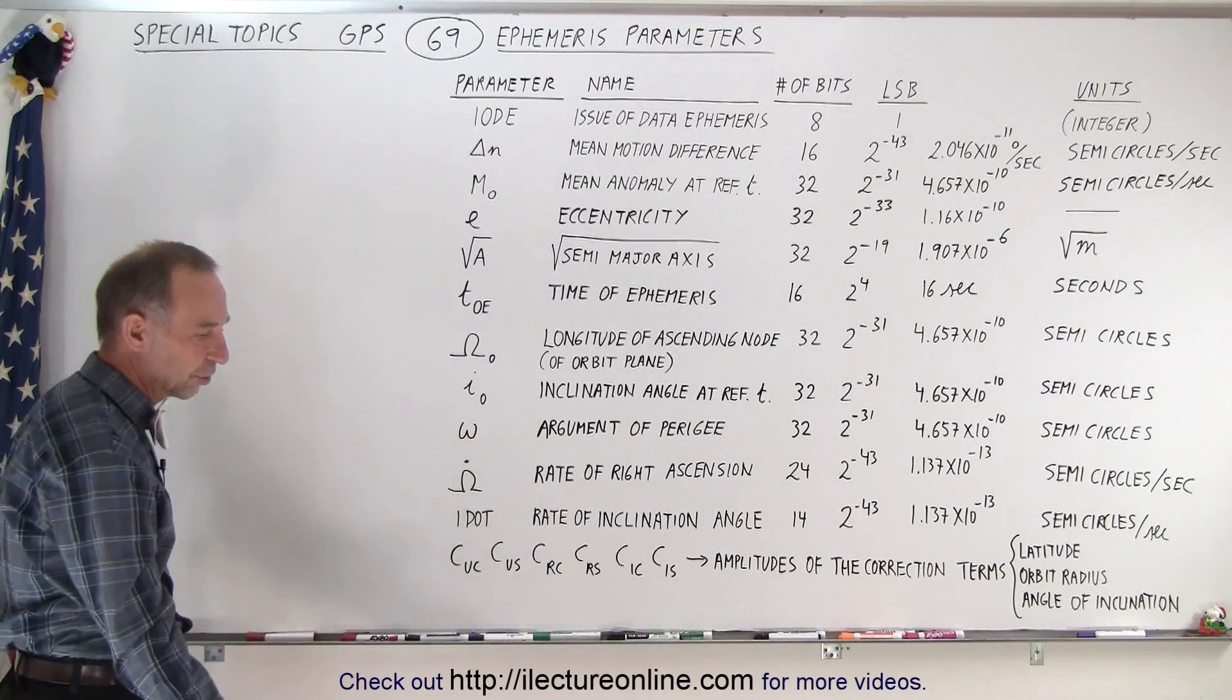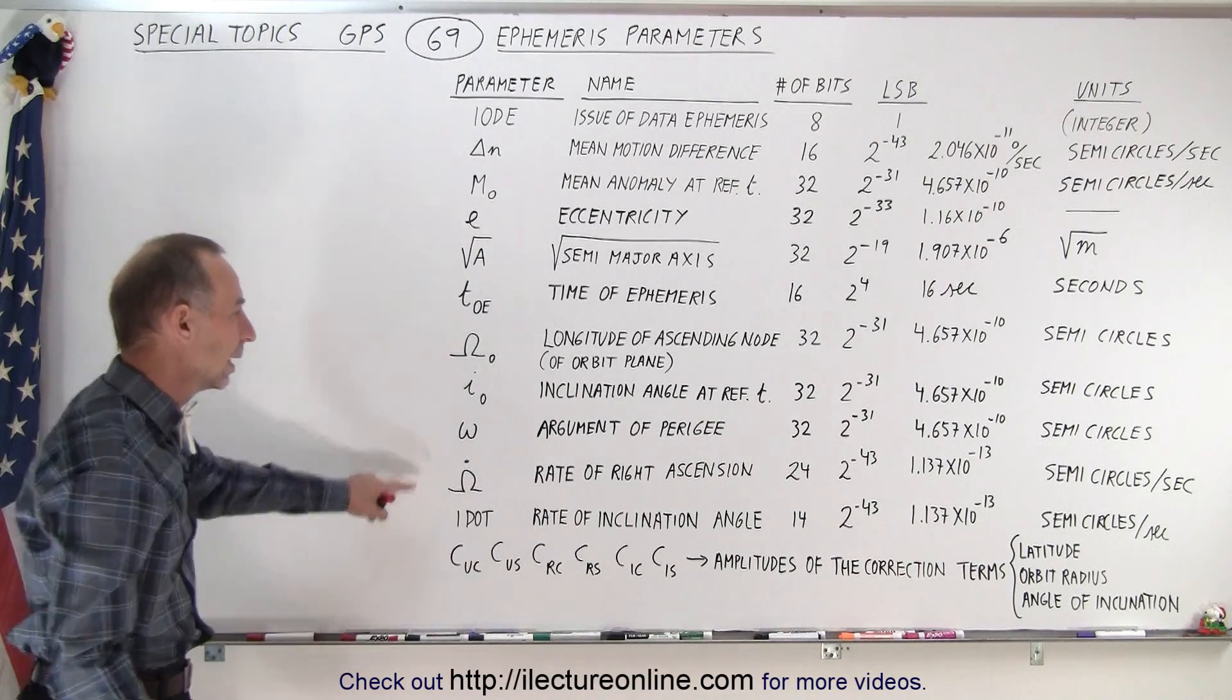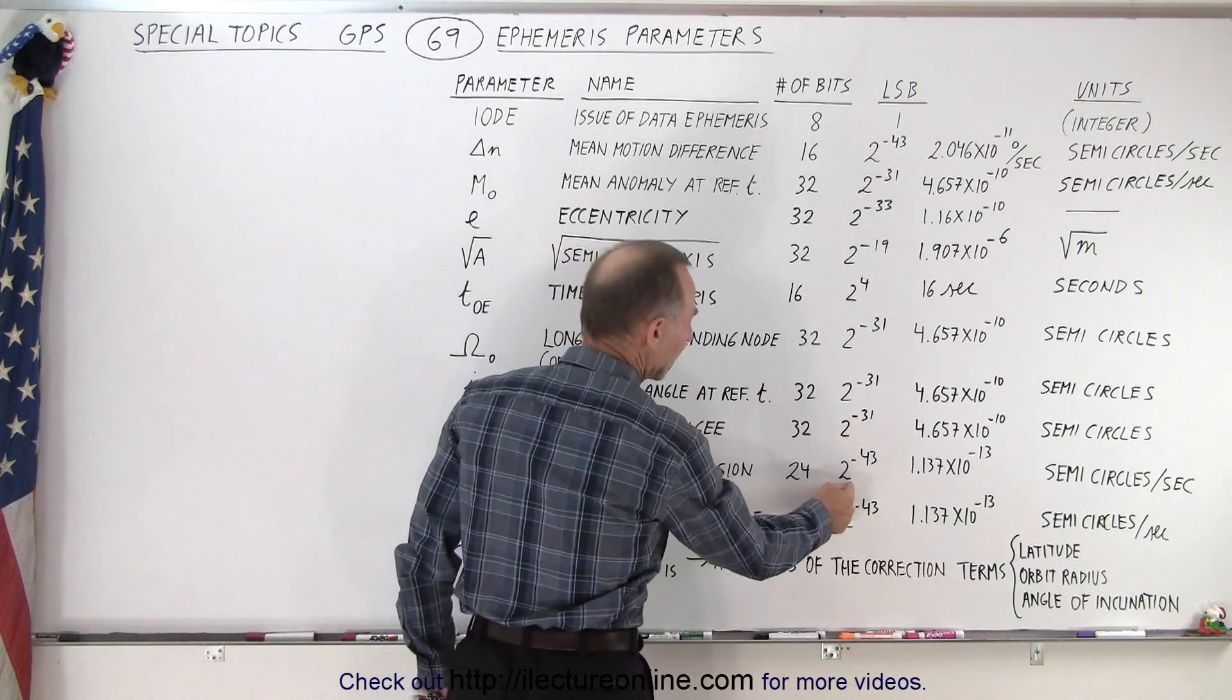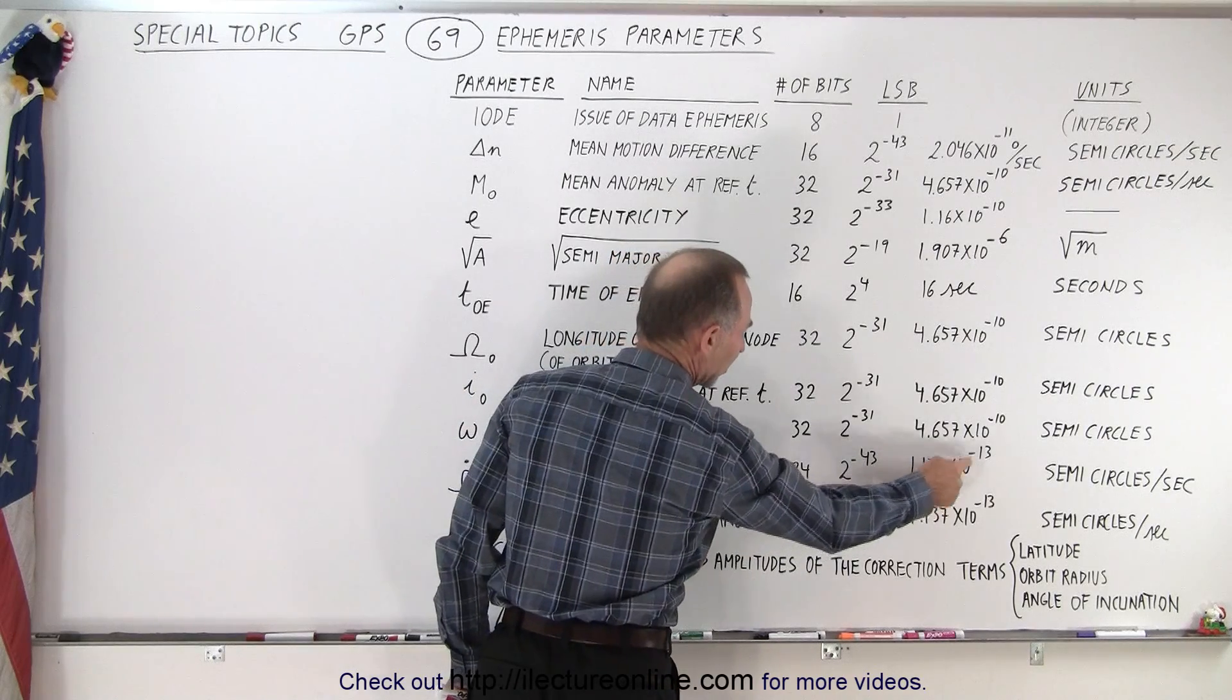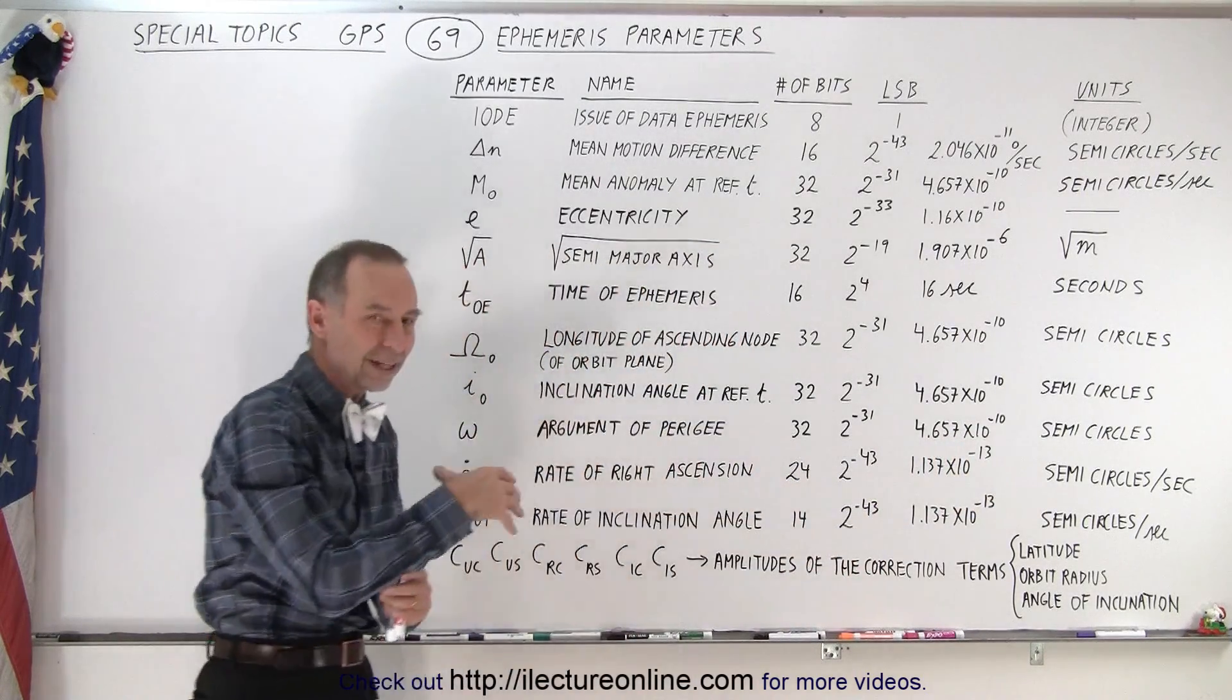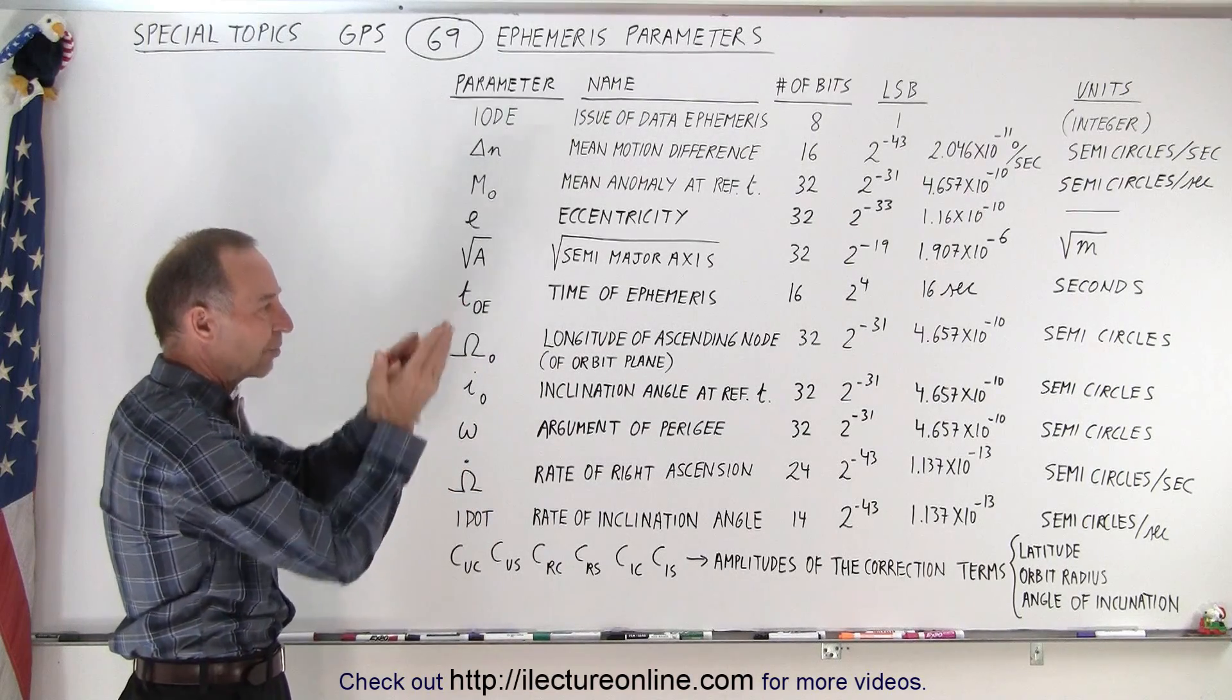Then we have the rate of right ascension. The rate at which it rises above the horizon, so to speak. Notice that the LSB is an extremely tiny number, 1.137 times 10 to minus 13. That's because it's semicircles per second.